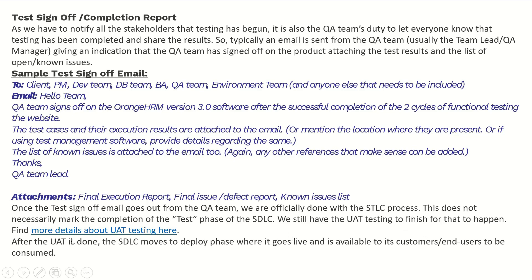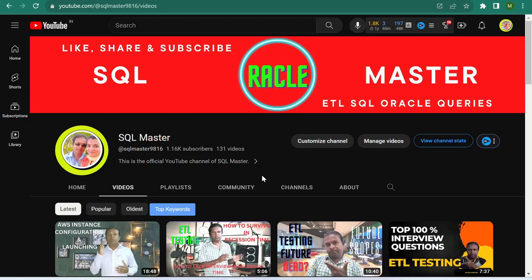Attachments include the final execution report, final defect report, and known issues list. Once the test sign-off email goes out from the QA team, we are officially done with the QA process, though this does not necessarily mark the completion of the SDLC — UAT testing still needs to finish. After UAT is done, the SDLC moves to the deploy phase where it goes live and is available to customers. Thanks for watching — please like, share, and subscribe to the SQL Master YouTube channel.